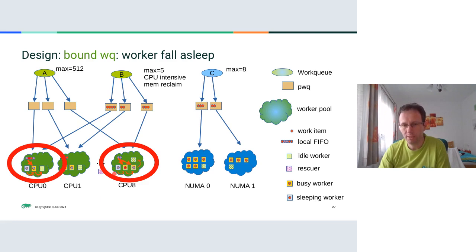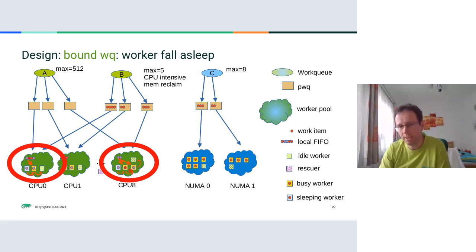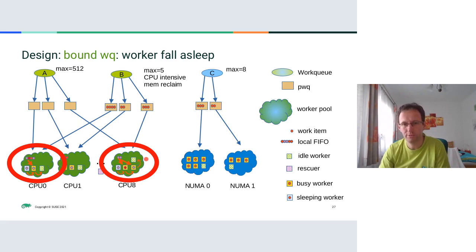On CPU 8, the situation is even more complex. The first pending work was from the CPU-intensive workqueue, so it will occupy the newly awakened worker for a longer time, automatically waking another worker — which was the last idle one — so it creates another idle worker and then starts processing one more work item. In this case, the sleeping of one worker indirectly woke two workers and even caused the creation of another worker.